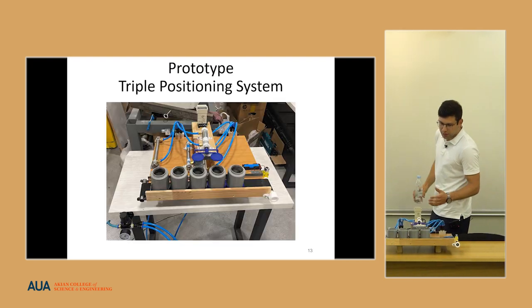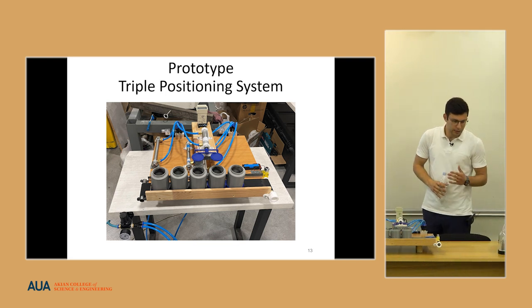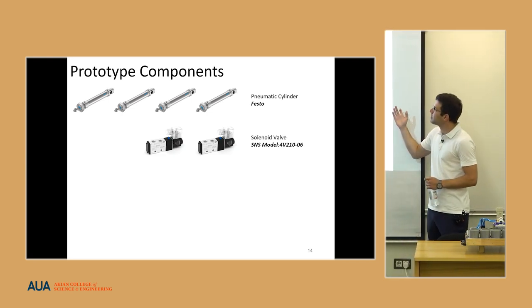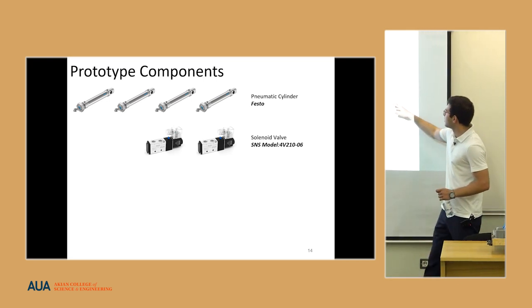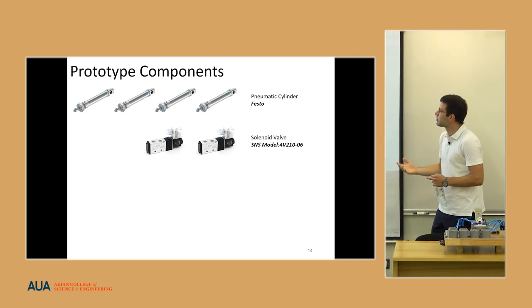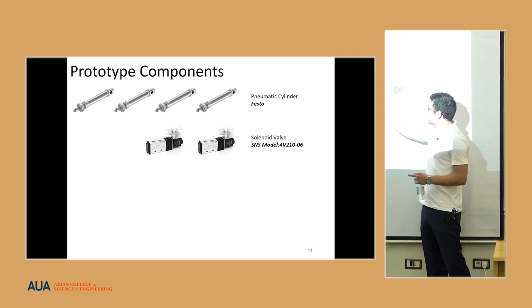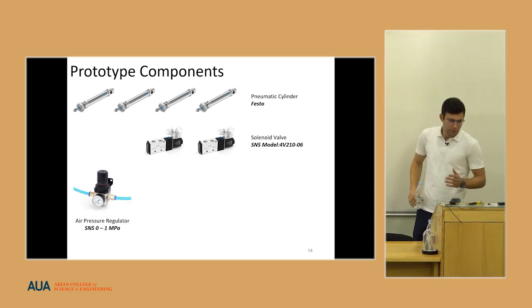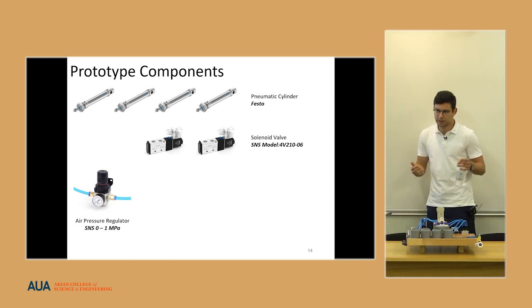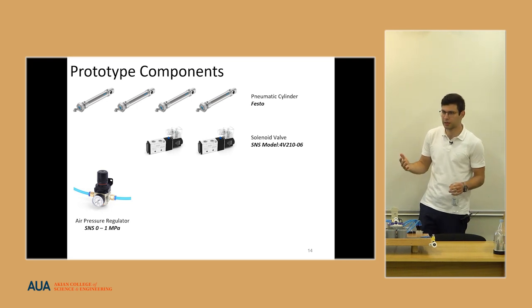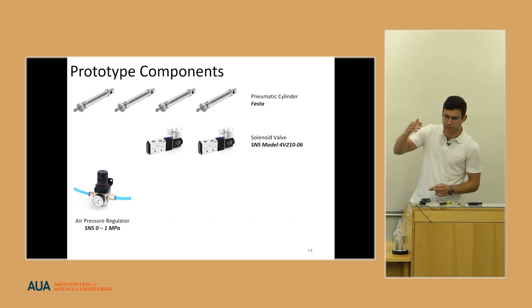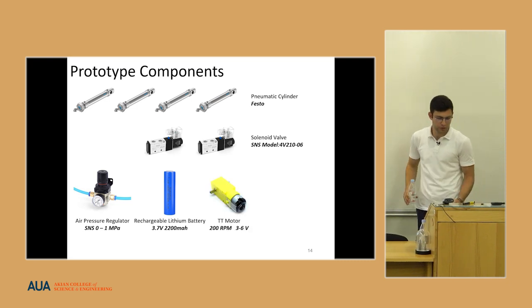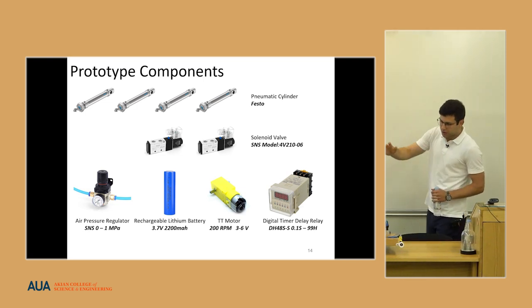And this is the prototype for the triple positioning system. Let's understand what I used for this prototype. First of all, instead of using three pneumatic cylinders, I used four of them. I used four pneumatic cylinders and two solenoid valves. So solenoid valves are the controllers for the pneumatic cylinders. The first one is connected to two of the cylinders and the other to other two cylinders. I used the air pressure regulator to regulate the pressure we had in the laboratory because the pressure we had was 10 atm and I needed to drop it down to 1 atm because 1 atm is enough for the cylinders to move the pistons freely. I used the rechargeable lithium battery to turn on the DC motor and also I used the timer which is this one as you can see.